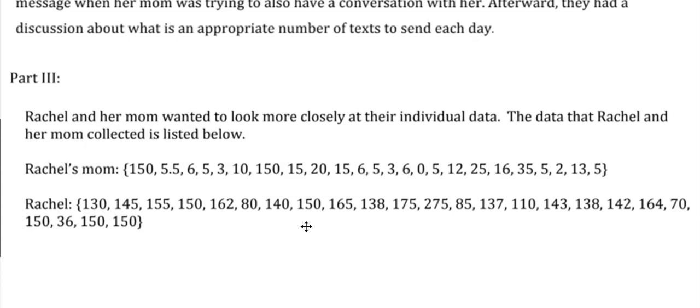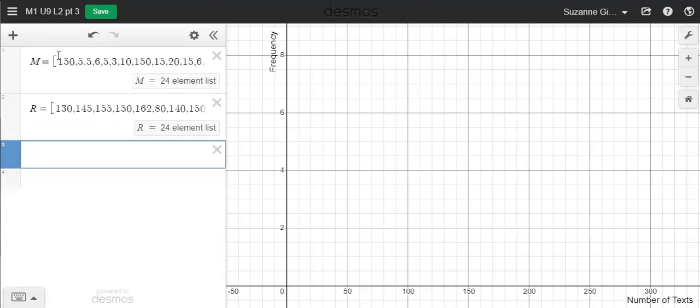Just by looking at the data before we do anything with it, it looks like a lot of the numbers for Rachel's mom are considerably less than a lot of the data values for Rachel. So let's take a closer look, and I'm going to use Desmos to graph this data. In Desmos, I've already typed in the data. So I just did M for Rachel's mom, then equals, and then I used this bracket and typed in all the data values. I did the same for Rachel here.